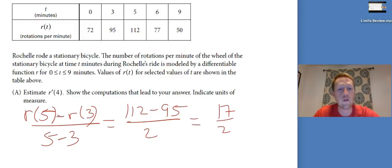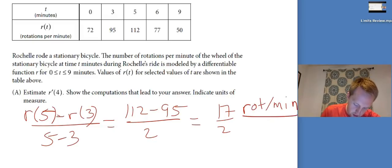Only thing that we're missing at this point is it says indicate units of measure, so we need to make sure we do that, or else we wouldn't even get the point for all the work we just did. So the units of measure for the derivative, remember, that's going to be the units for Y divided by the units for X. So we're going to do rotations per minute per minute. Now, if you don't like that, you could say rotations per minute squared.